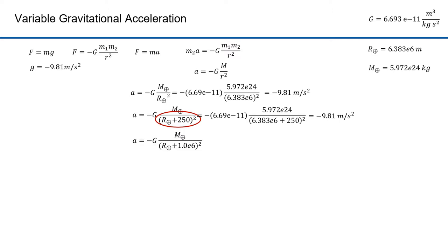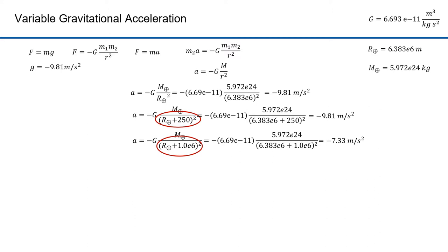Let's take the case that's a thousand kilometers above the surface of the earth, or 1 times 10 to the 6 meters. I've added 1 times 10 to the 6 meters to the radius of the earth. Filling in all the constants gives 7.33 meters per second squared, which is a big difference from 9.81 meters per second squared. So if you travel a thousand kilometers above the surface of the earth, you'll feel less acceleration.